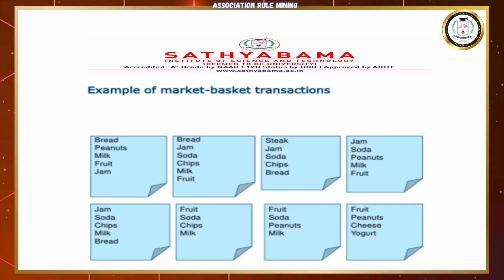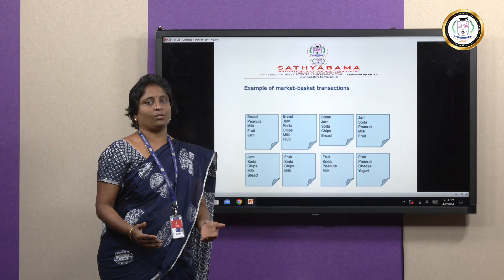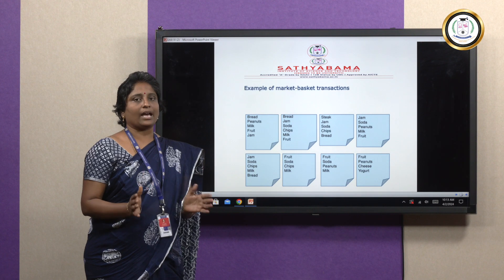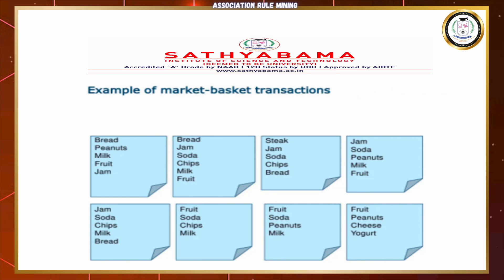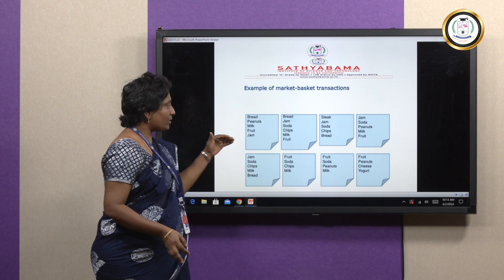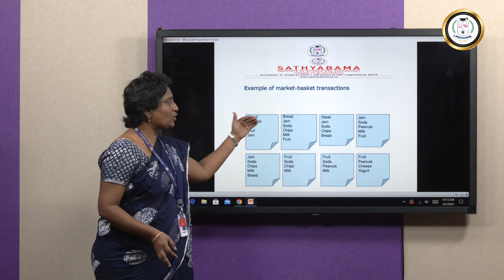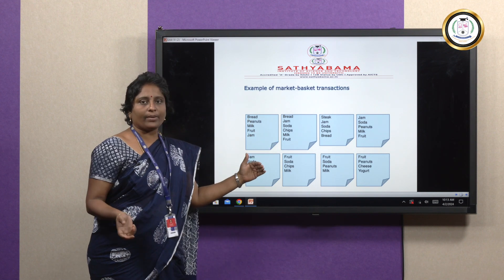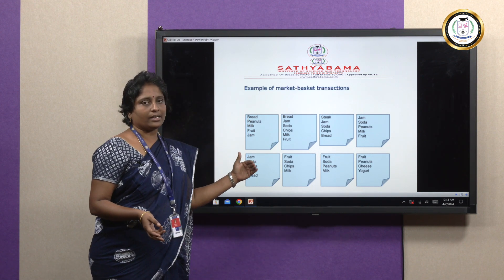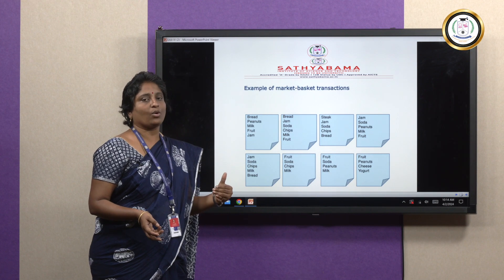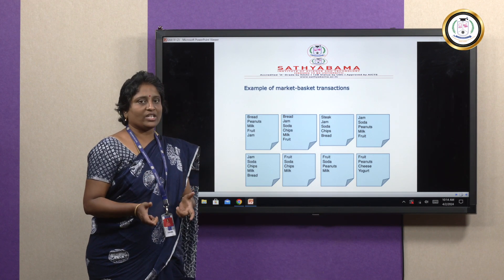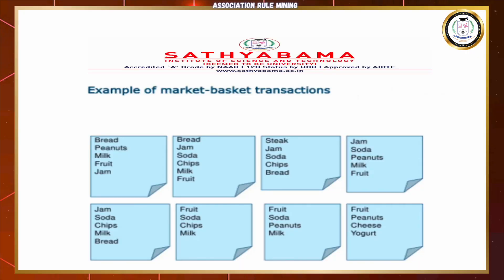If you go to the supermarket, you will have a transaction of what you purchased — that scenario is called market basket transaction. We are going to find how customer one's pattern of purchasing items relates to customer two. The goal is to improve productivity, increase customer satisfaction, and increase the profit of the business. But the question is how we are going to relate these, because they are unique purchases of each customer.